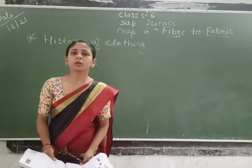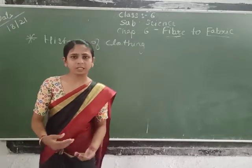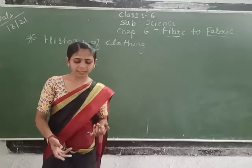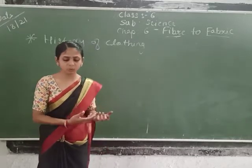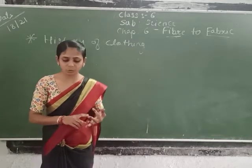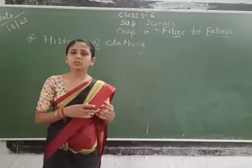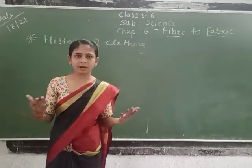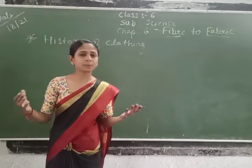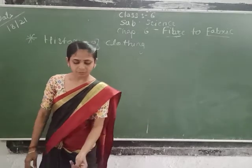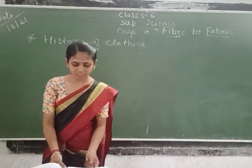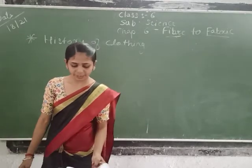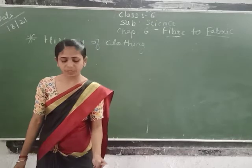There are different types of stitched clothes. A plain fabric such as a shirt and pant is made in a specific way. Western clothes such as shirts and pants became popular over time.